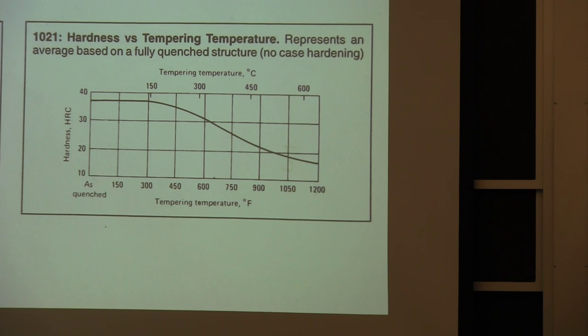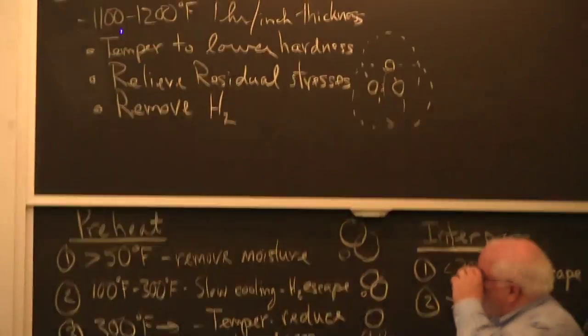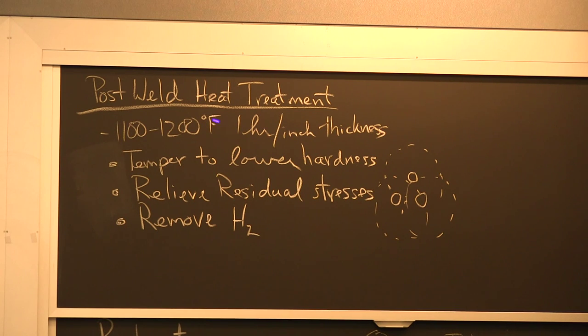We do post weld heat treatment up here in the 1,100 to 1,200 degree range. Post weld heat treatment is another process that we might do for difficult to weld steels where we heat them in the 1,100 to 1,200 degree Fahrenheit range typically for one hour per inch of thickness. You put it in some furnace and when the surface gets up to 1,100 degrees you need to soak it so the temperature on the inside gets there.